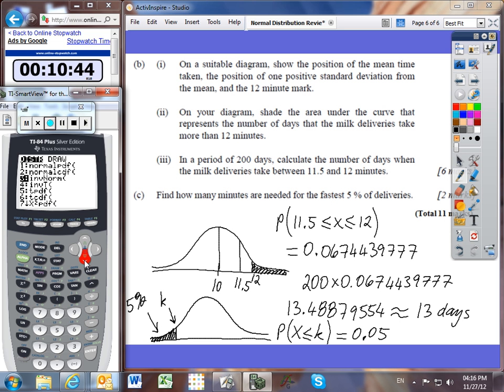Our inverse norm, we've been given our percentage of 0.05. My mean is still 10, and my standard deviation is still 1.5.